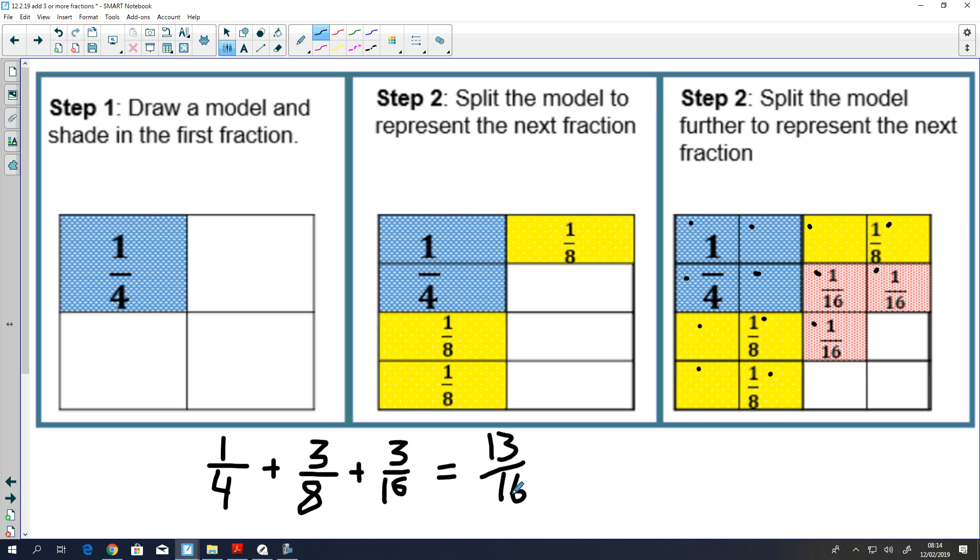And if we were to rewrite our fractions with changed denominators, it'd be 4 sixteenths plus 6 sixteenths plus 3 sixteenths. As you can see, we leave the denominator the same and the numerators equal 13.